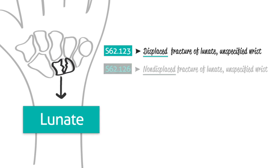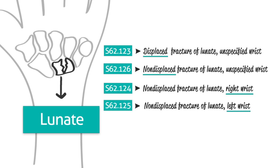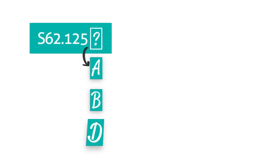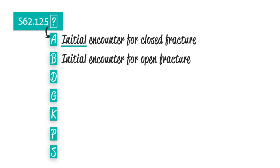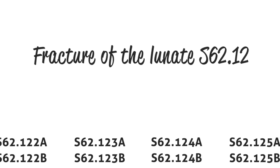You have to know the wrist is made up of carpal bones and that the lunate is one of those bones. But you can't stop there. Was it a displaced or non-displaced fracture? And was it the right or left wrist? You'll also need a 7th character in this category of codes — A, B, D, G, K, P, or S — to indicate if it's an initial or subsequent visit, if it's an open or closed fracture, if it's healing correctly, and S for sequela, which means a condition caused by a previous disease or injury.